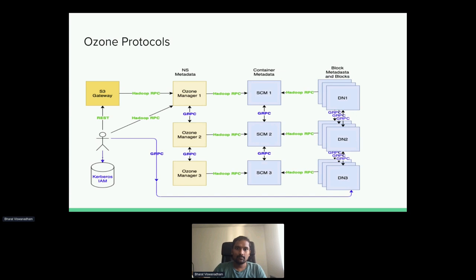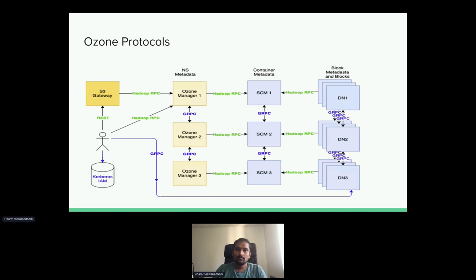Regarding protocols — horizontally, we have Hadoop RPC across the board from Gateway to OzoneManager to SCM and data nodes. Vertically, for replications, the replication is based on the gRPC protocol — what the Raft library uses is purely gRPC. We leverage gRPC improvements to efficiently achieve data replication and metadata replication for high throughput. Next, we'll talk about the security mechanism and how we protect those protocols.